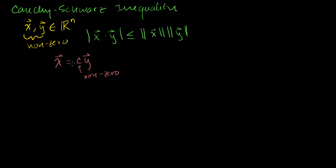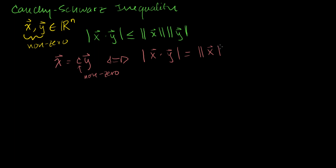But that essentially just falls out of this information. If and only if x equals a scalar multiple of y, then we can say that the absolute value of the dot product of the two vectors is equal to the product of their lengths.